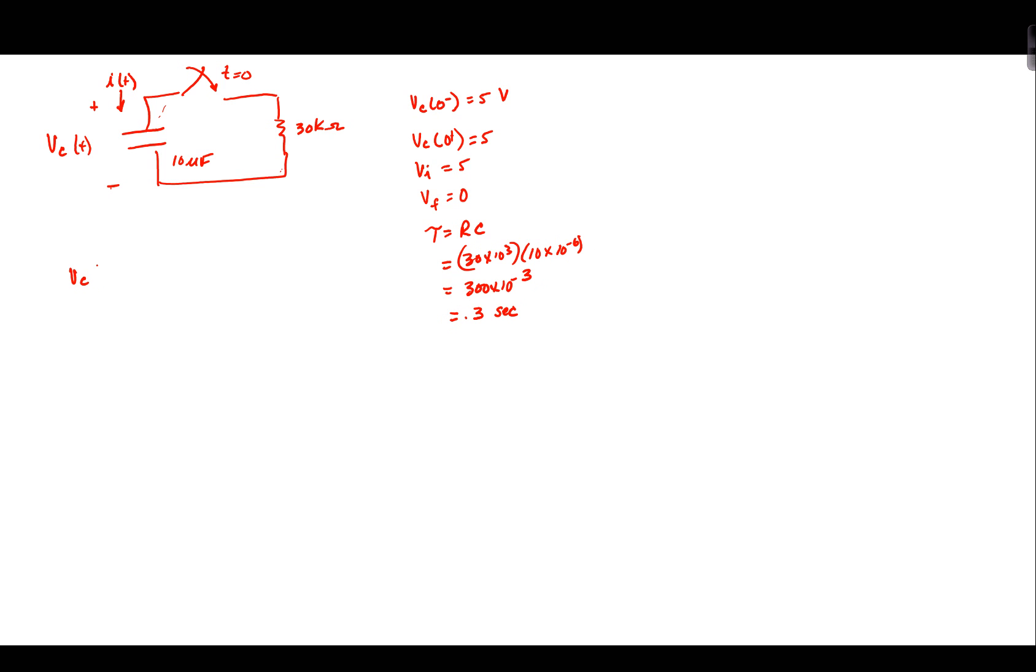So, we know that the volts across the capacitor as a function of time is equal to the final voltage, plus the initial minus V final, e to the minus t over tau. So, we now just plug in the numbers, V final is zero, plus the initial of 5 volts minus the final voltage is zero, e to the minus t divided by 0.3, which equals 5e to the minus t over 0.3.